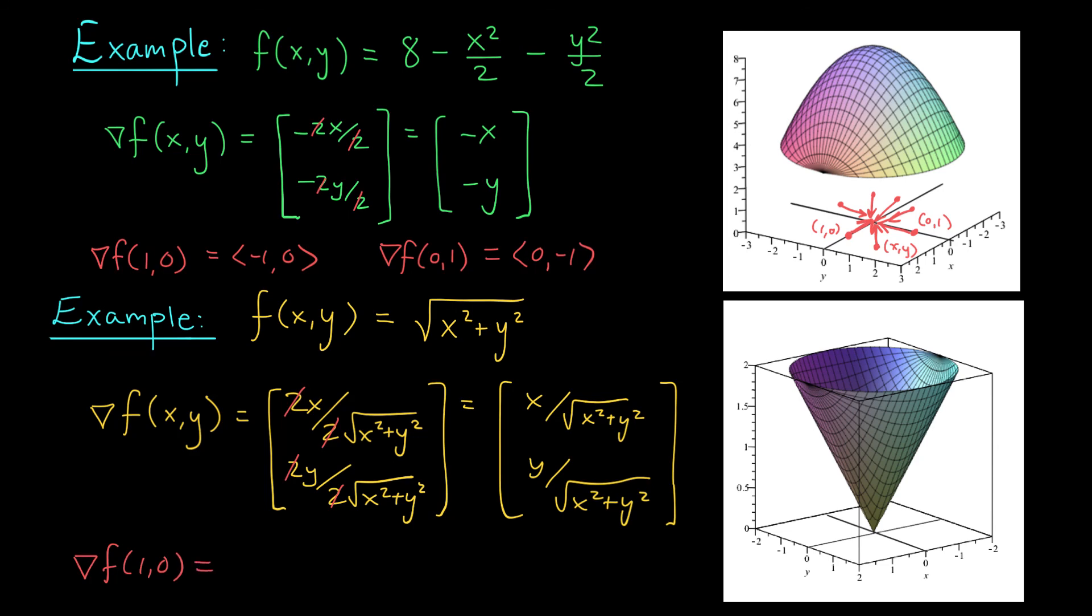In this example, del f at (1,0) is going to give me the vector 1 over √(1² + 0²), that's 1, and 0 over this square root, that's 0. So at (1,0), I get the vector (1,0). Del f at (0,1) is going to give me 0 in the first component, and then 1 in the second component. So my gradient here is going to be pointing in this direction. Notice now my gradients are pointing away from the origin, and I'll let you convince yourself that that's going to be the case at all points in this 2D plane.